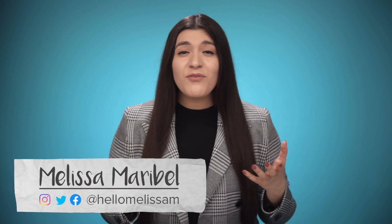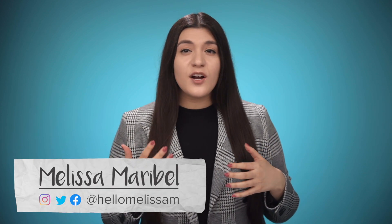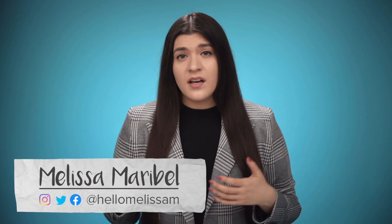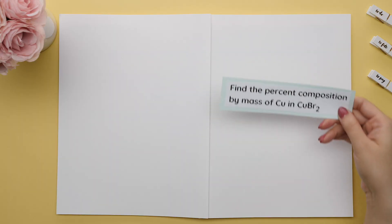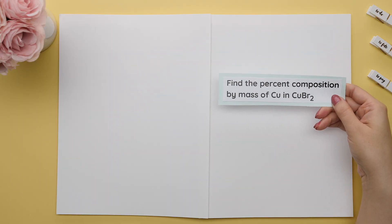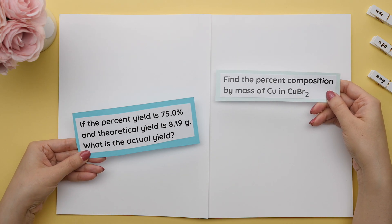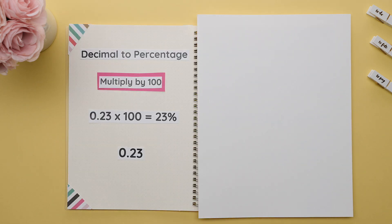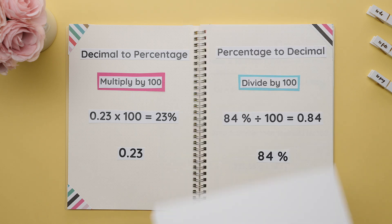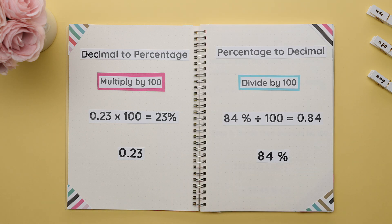In chemistry there are several formulas that involve percentages. You will either be asked to find the percentage or you will be given the percentage and asked to find an original amount. Let's review how to change a decimal to a percentage and the opposite, how to change a percentage to a decimal.